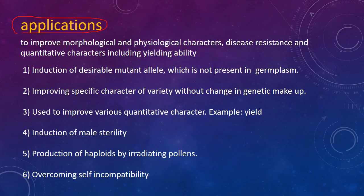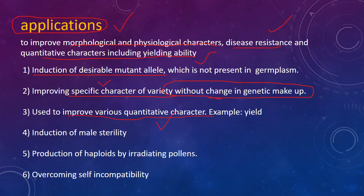The applications of mutation breeding are important and frequently asked in exams. The main reasons for applying mutation breeding: to improve morphological and physiological characters; to give disease resistance and improve quantitative characters including yield. Key applications include induction of desirable mutant alleles; improving specific characters of a variety without changing the overall genetic makeup; improving quantitative characters especially yield; inducing male sterility; production of haploids by irradiating pollens; and overcoming self-incompatibility.